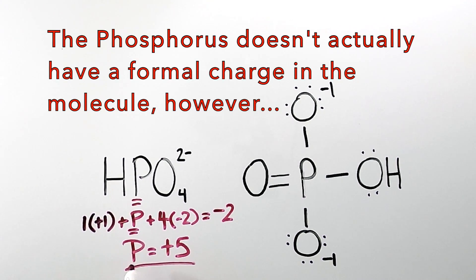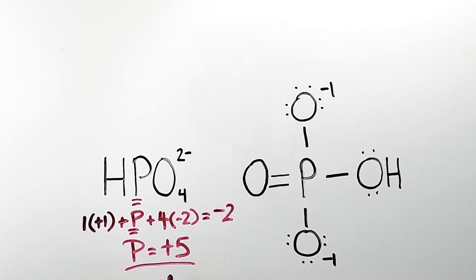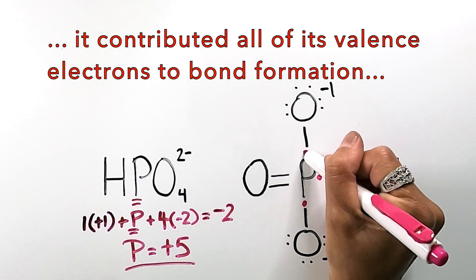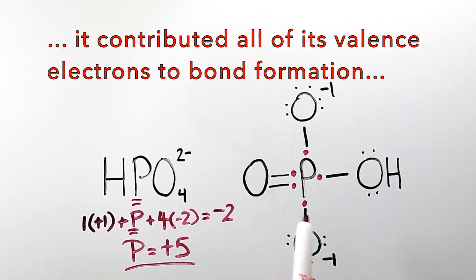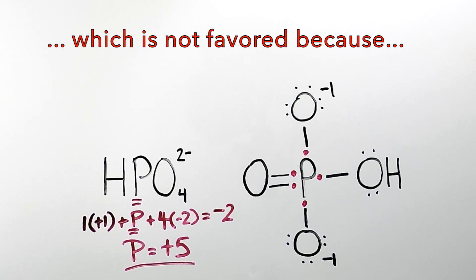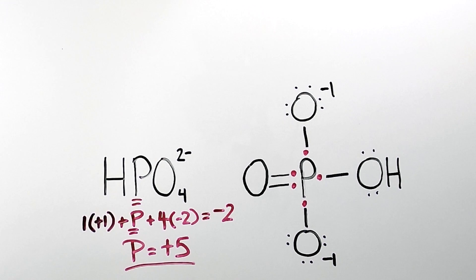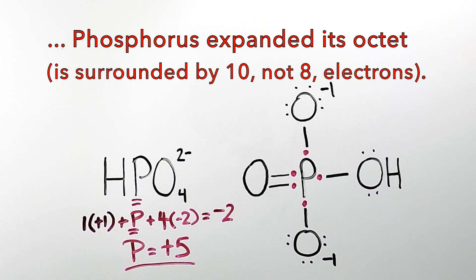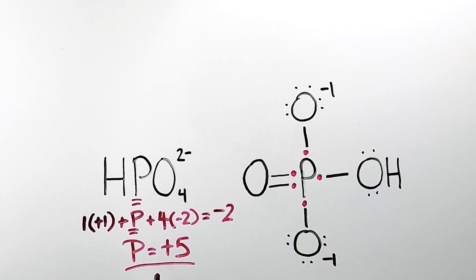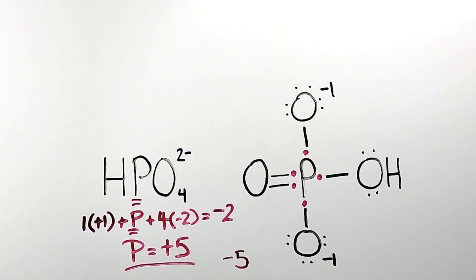A positive five means that phosphorus contributed, or in a way lost, five electrons in forming bonds with the four oxygens in hydrogen phosphate — you can count all five electrons that phosphorus contributes. That's oxidation number. Oxidation number is not the molecular charge or the formal charge on any atom in a compound. It simply tells us how many electrons an atom contributes or obtains upon forming bonds. If it were a negative five, that would mean phosphorus obtained five electrons upon forming bonds. Positive means contribute; negative means obtain. Simple as that.